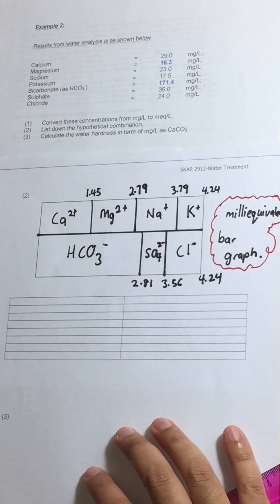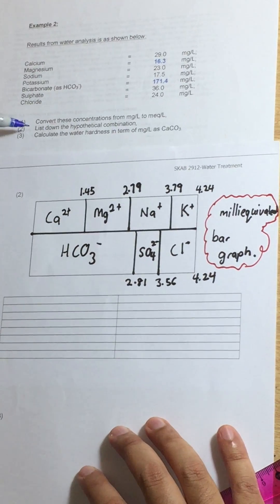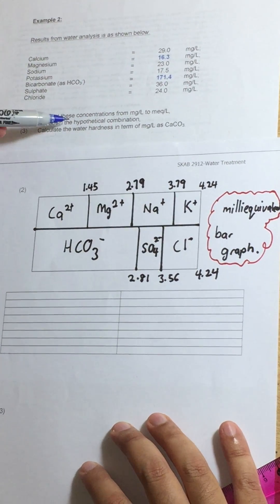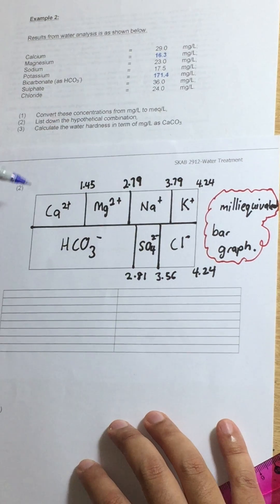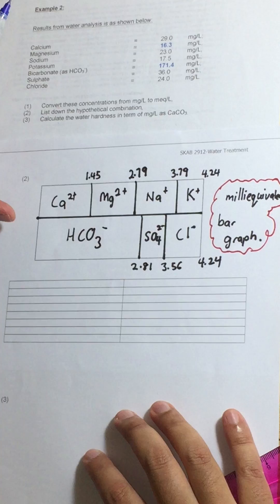Hi and assalamualaikum. We have not completed question part 2 because it says we need to list down the hypothetical combinations. We have just drawn the mill equivalent bar graph. So this is the mill equivalent bar graph.